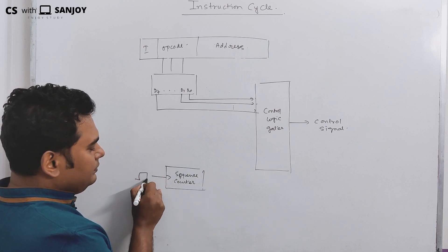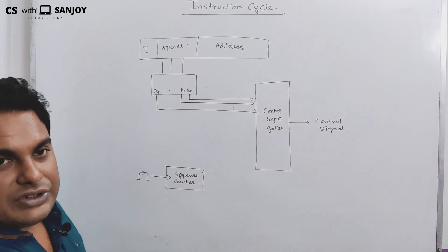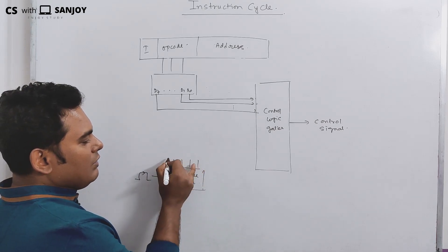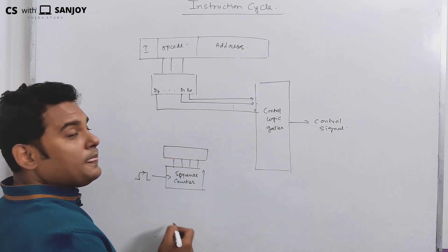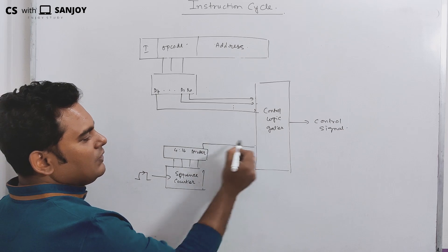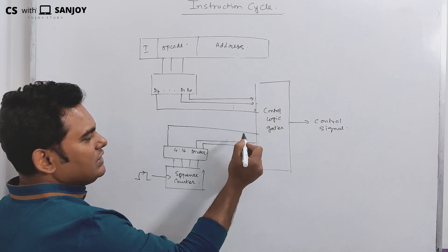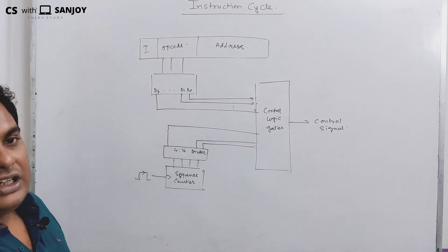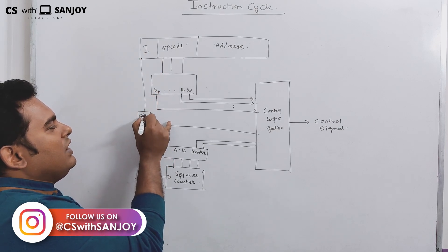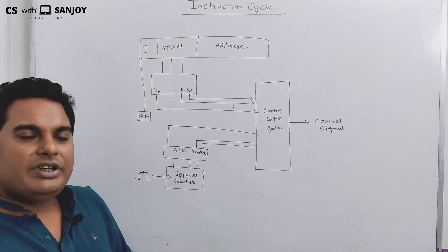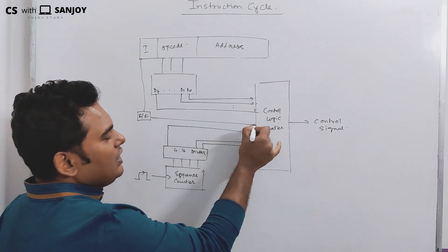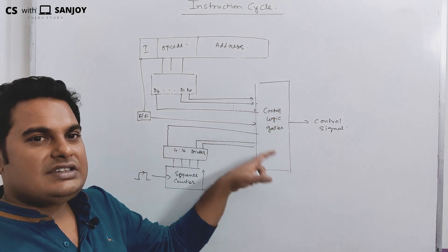The sequence counter is a sequential circuit with a clock. It counts and generates the sequence. There is also a 4-to-16 line decoder. The sequence counter maintains the sequence, the decoder output feeds into the control logic gates.